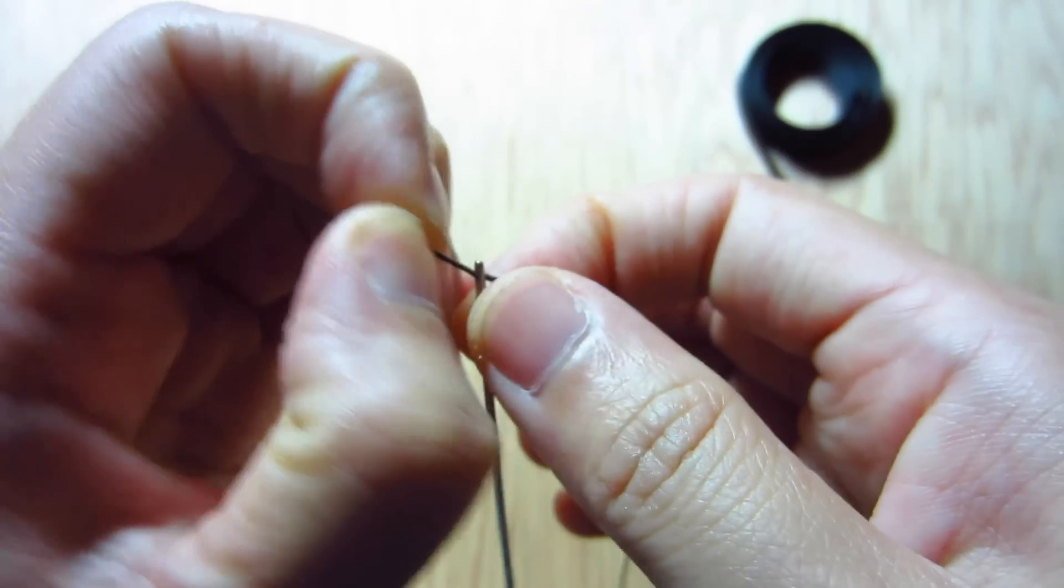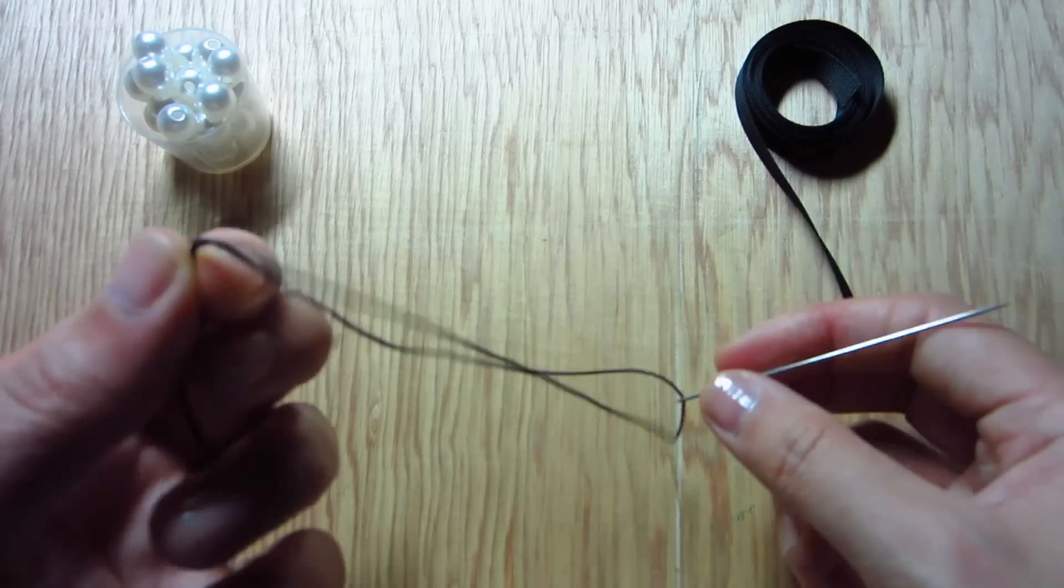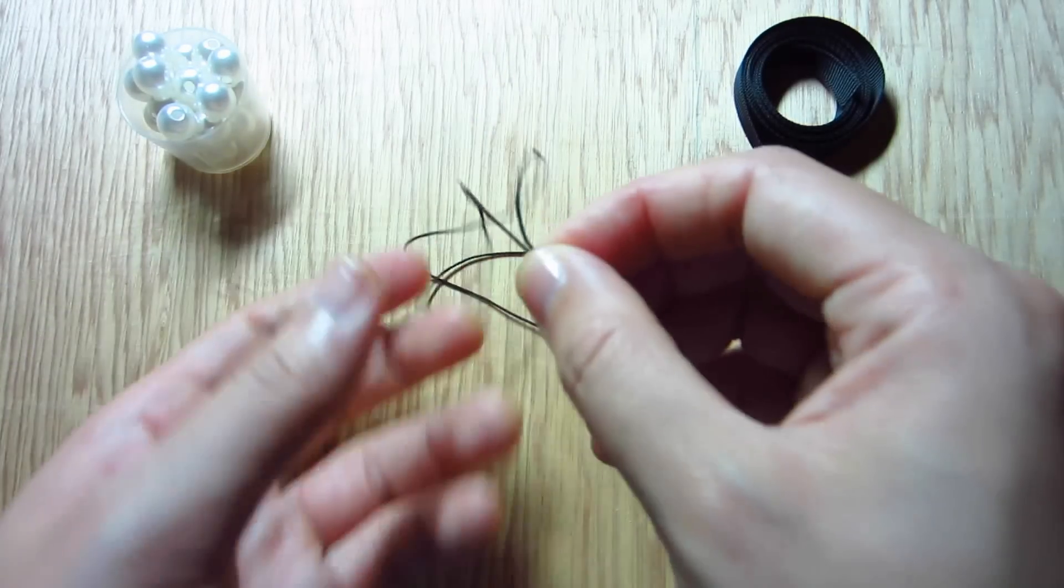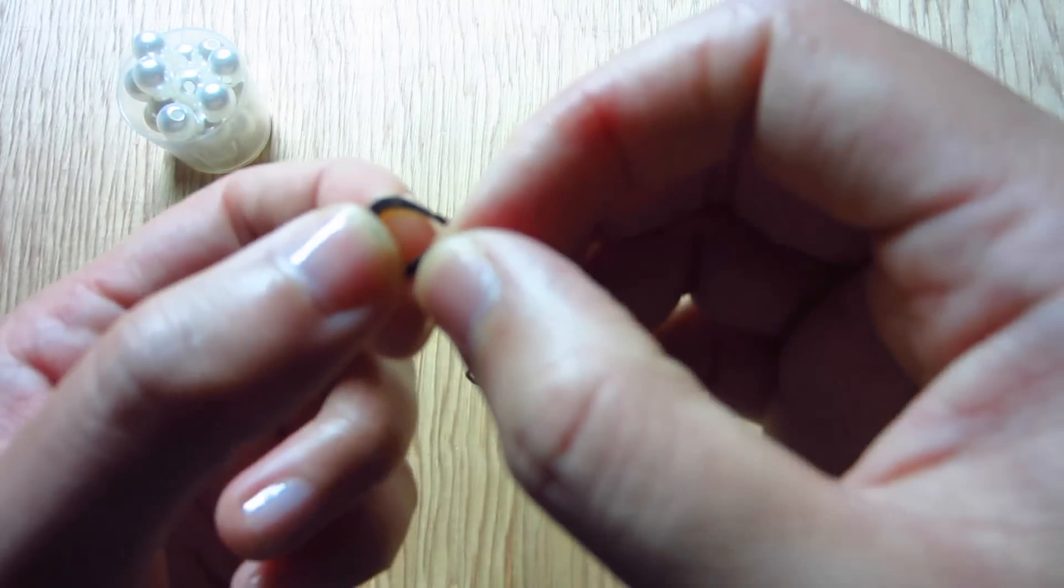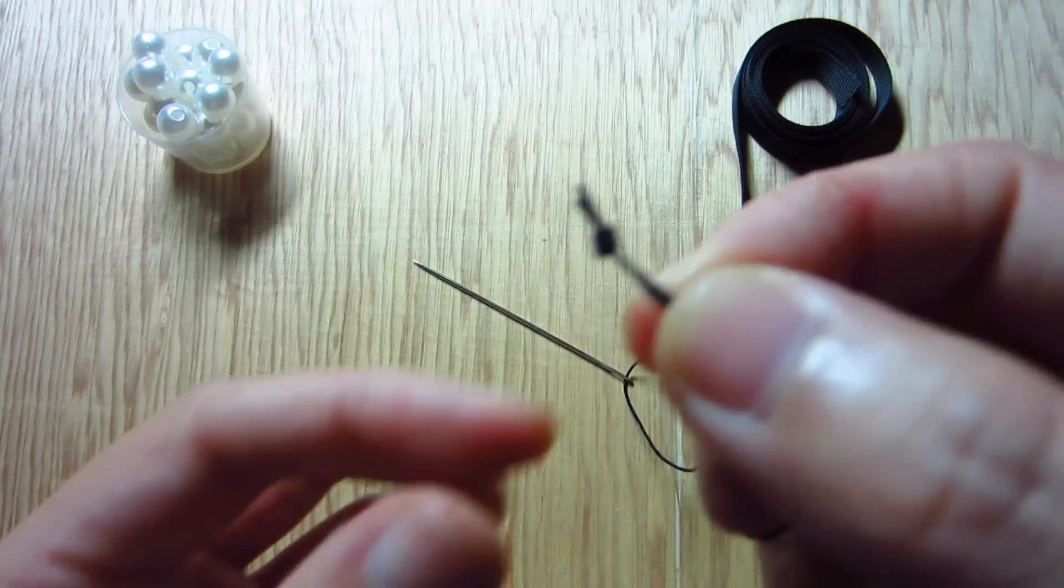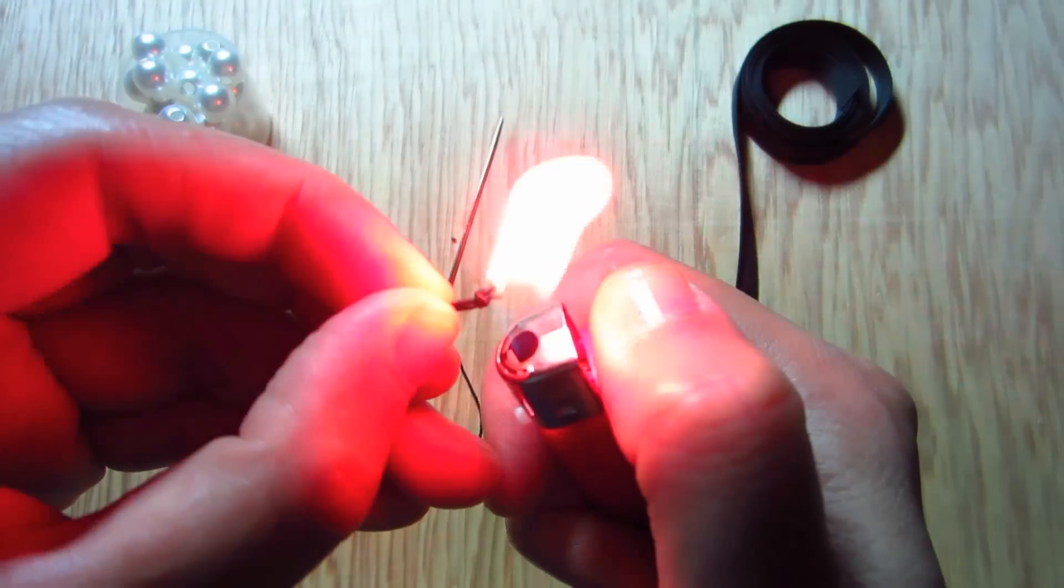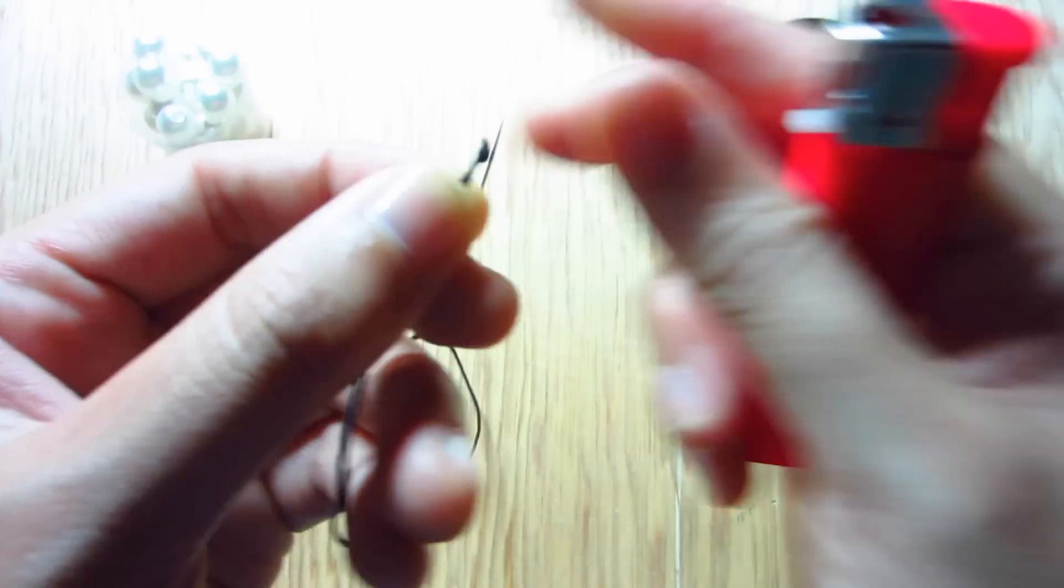Start by threading the cord on the needle, then tie a knot at the end. Melt the extra cord to secure the knot.